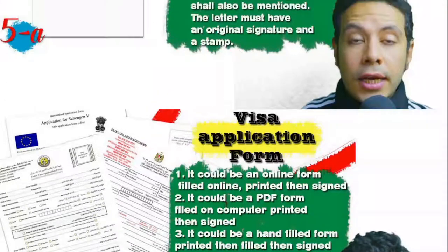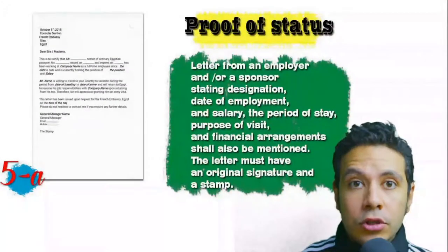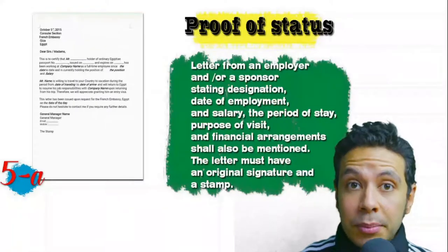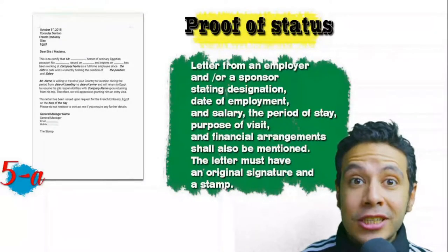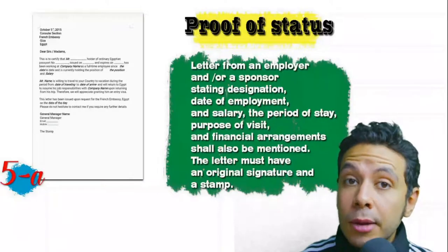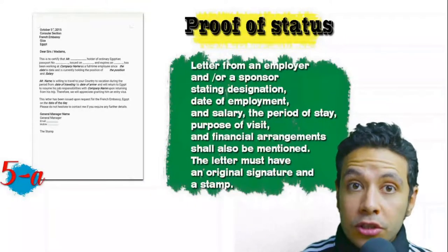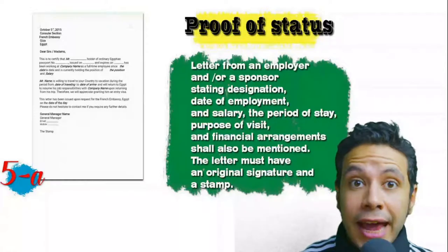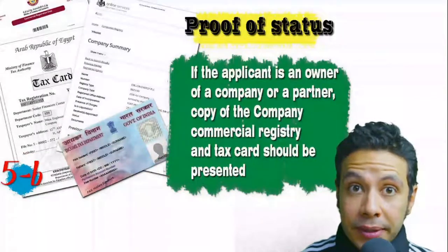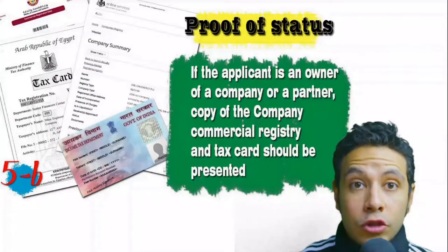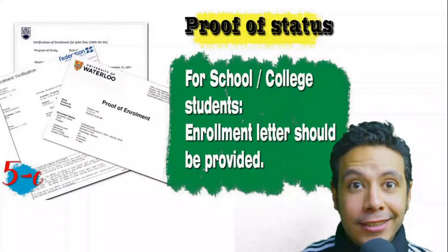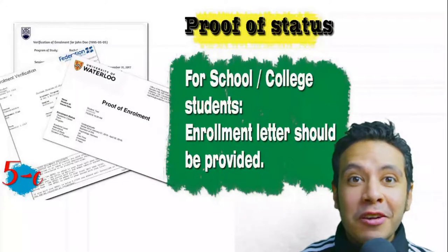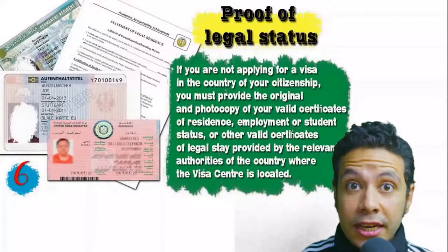In most visa application processes you will need to provide a proof of status. If you are an employee, you must provide a letter from your employer or HR department mentioning your name, work details, salary, address, and contact numbers. All letters must have an original signature and stamp. If you own a business, your commercial registry and tax card must be presented. If you are a student, an enrollment letter from your university or school should be provided.